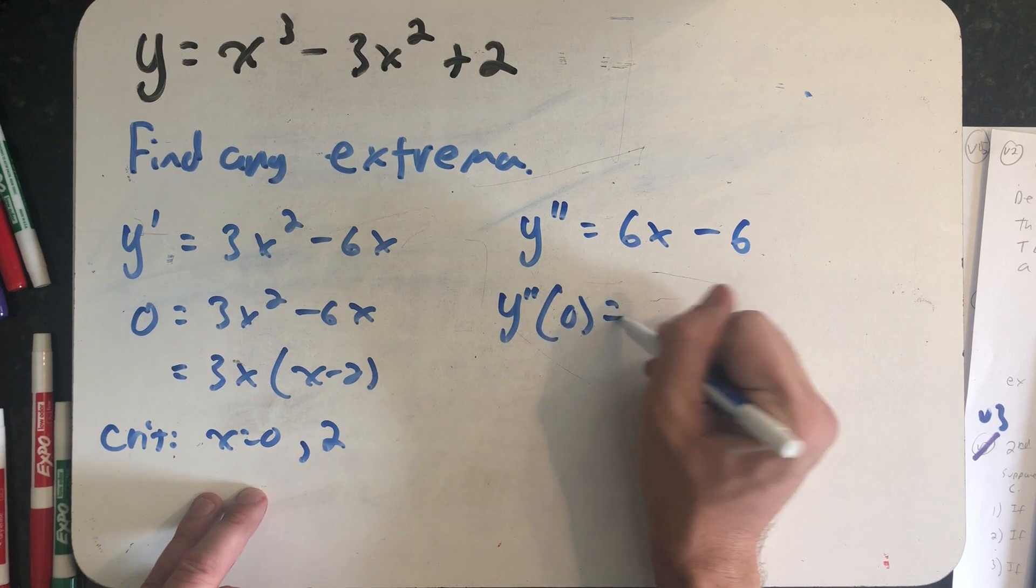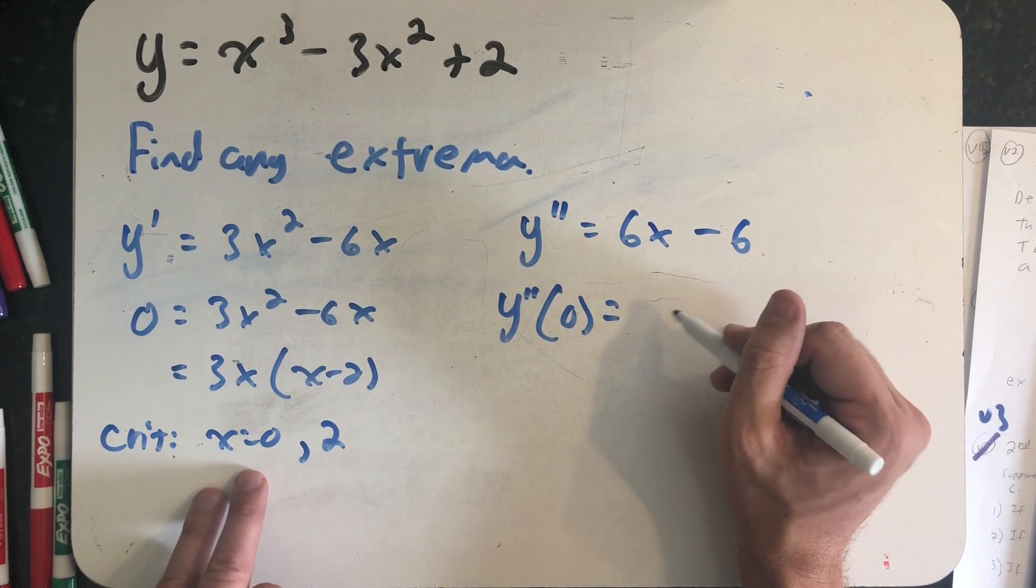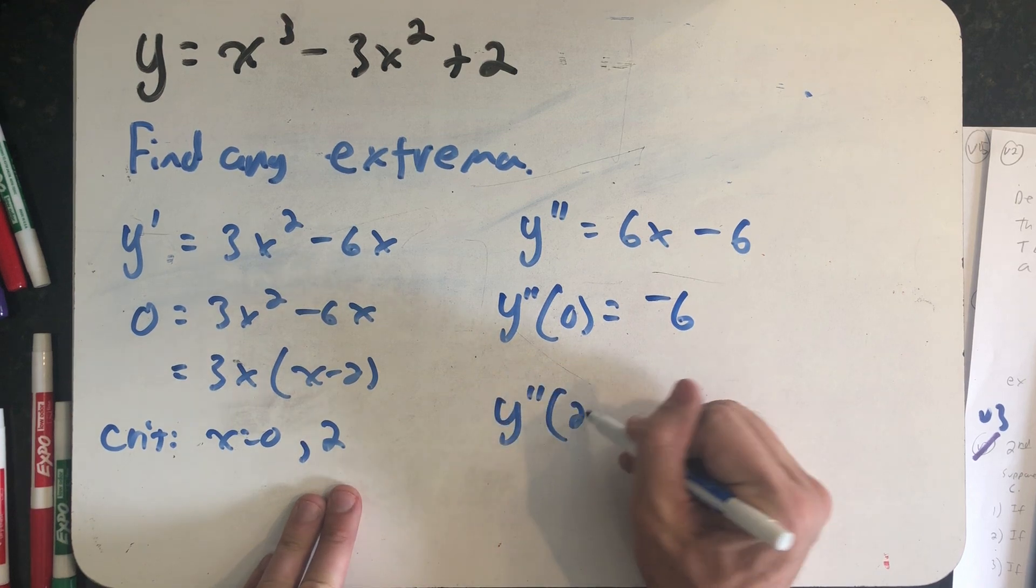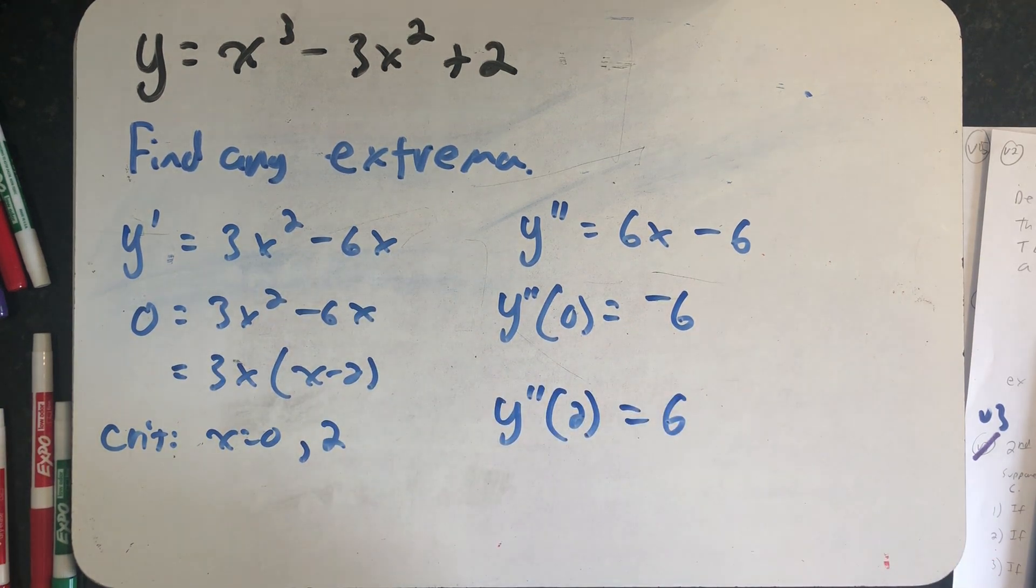And I'll just evaluate the second derivative at these two x's. So y''(0) = -6, and y''(2) = 6.